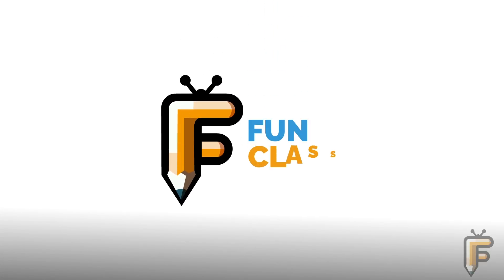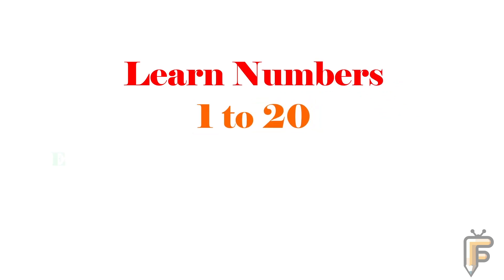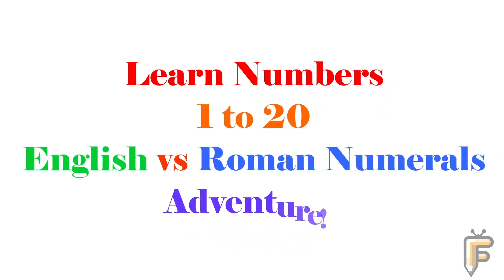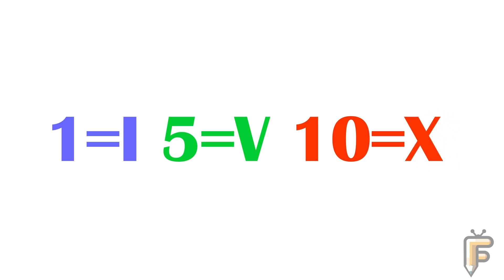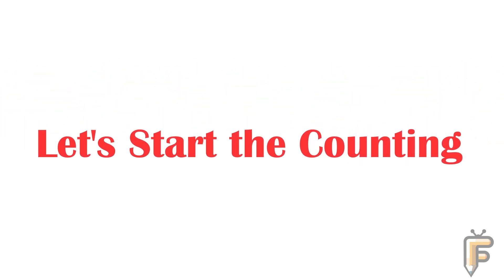Fun Plus TV: learn numbers 1 to 20 — English versus Roman numeral adventure. 1 is equal to capital I, 5 is equal to capital V, 10 is equal to capital X. Let's start the counting.